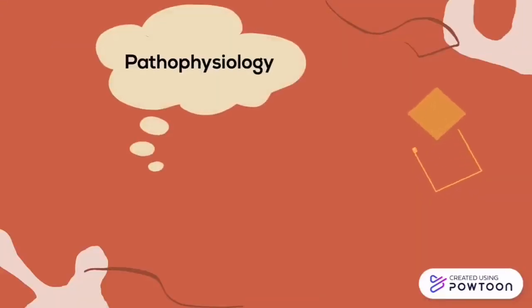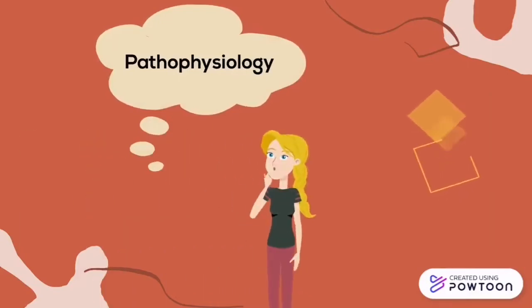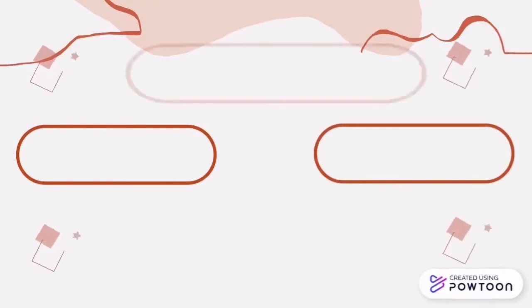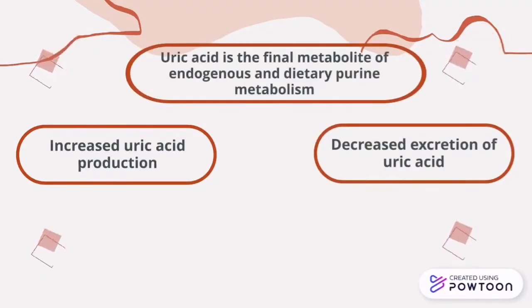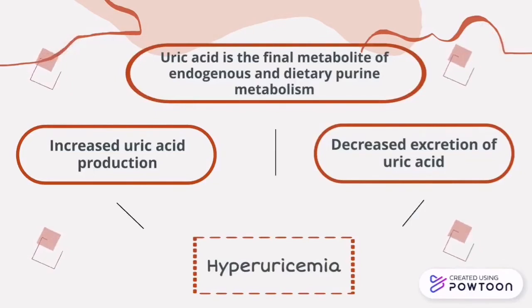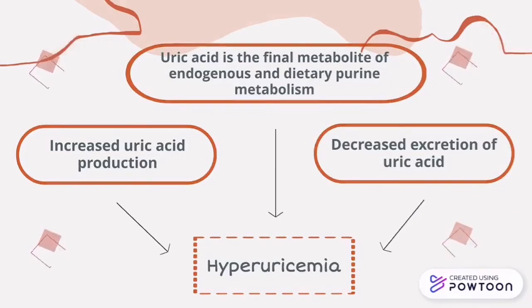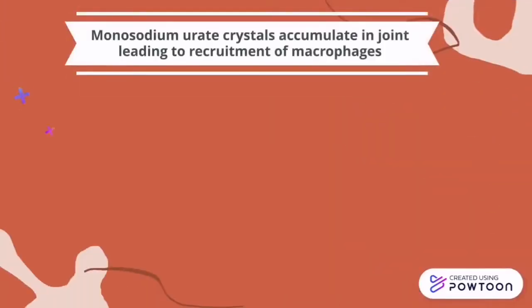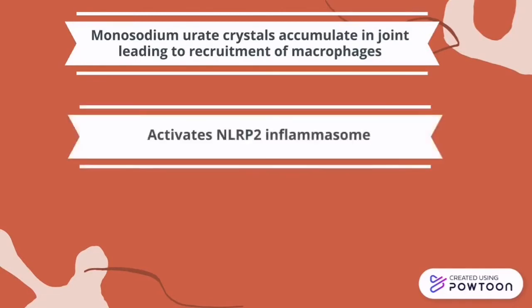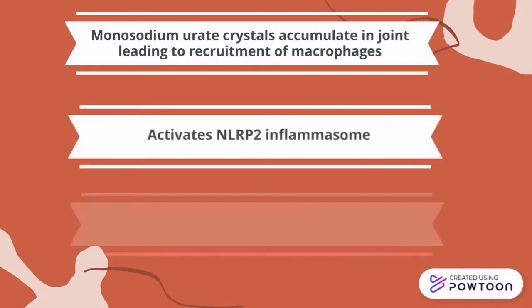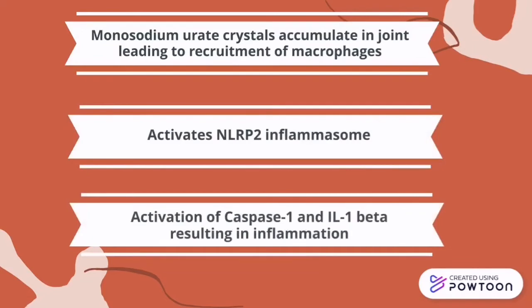Moving to the pathophysiology of gout: uric acid is the final metabolite of endogenous and dietary purine metabolism. Excessive uric acid, or hyperuricemia, may be caused by increased uric acid production and also decreased excretion of uric acid. Monosodium urate crystals accumulate in joints and lead to the recruitment of macrophages. Macrophages phagocytize the crystals and activate the NLRP3 inflammasome, causing activation of caspase-1 and IL-1 beta, which results in inflammation.